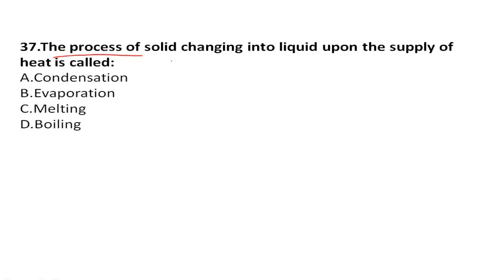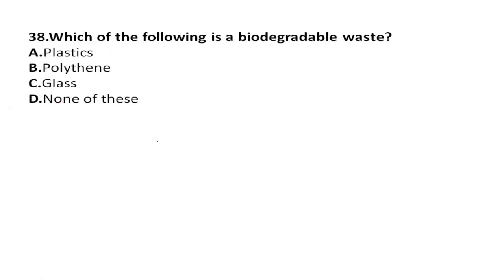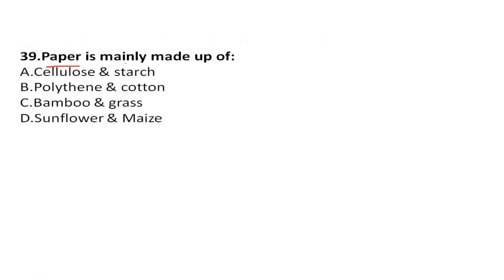The process of a solid changing into liquid upon supply of heat is called melting. Which of the following is biodegradable? Plastic, polythene, and glass are all not biodegradable, so the right answer is D: none of the above. Paper is mainly made up of bamboo and grasses.